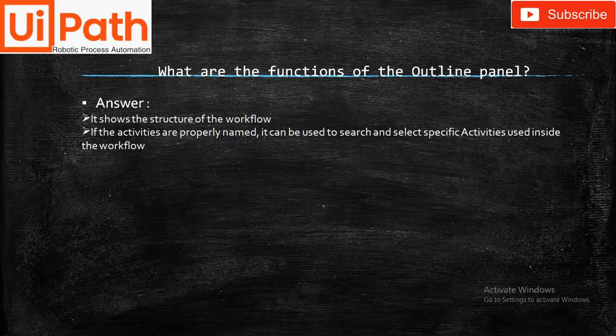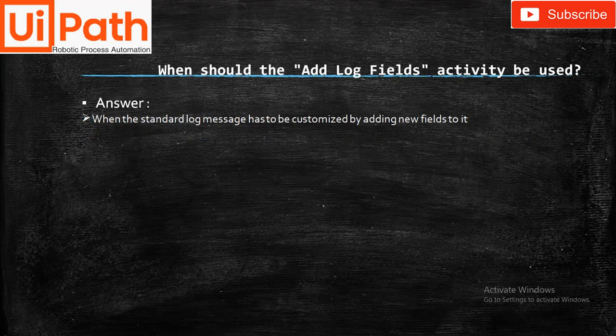What are the functions of the Outline panel? It shows the structure of the workflow, and if activities are properly named, it can be used to search and select specific activities used inside the workflow. When should the Add Log Fields activity be used? When the standard log message has to be customized by adding new fields to it.